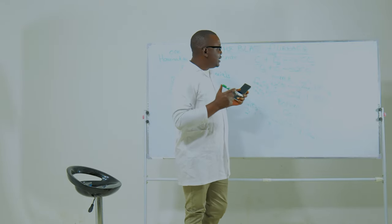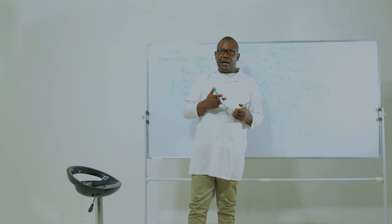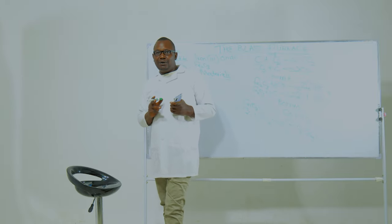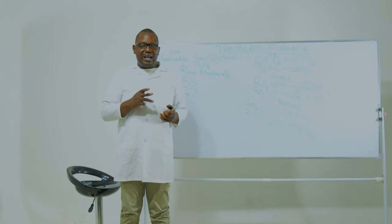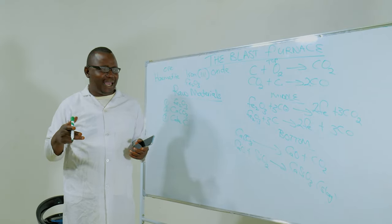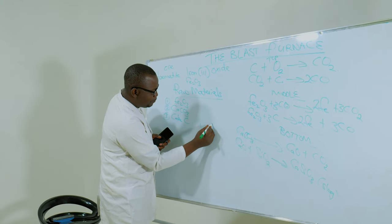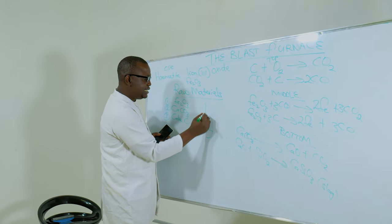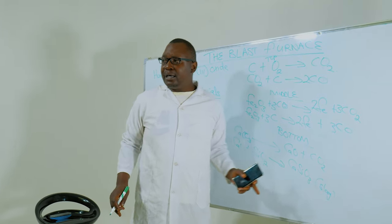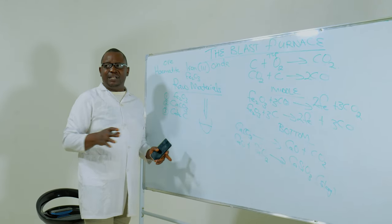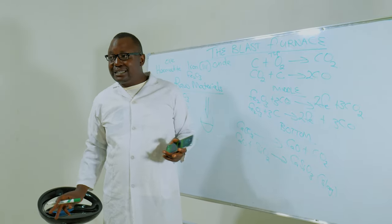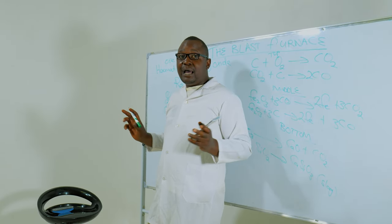This iron is not yet 100% pure, so it is transferred to what is known as the basic oxygen furnace, where a process known as the oxygen lance process occurs. Oxygen is blown into the iron, and impurities of sulfur and phosphorus vaporize as gaseous oxides, and we now have pure iron.